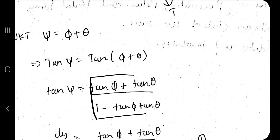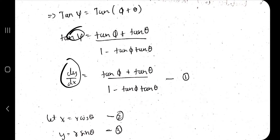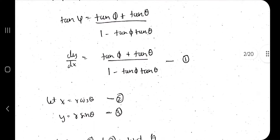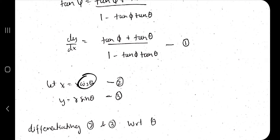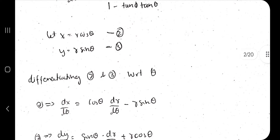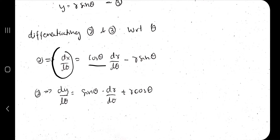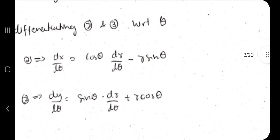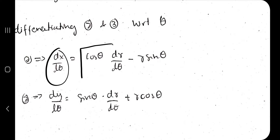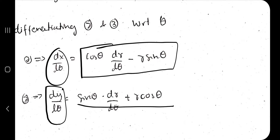Using the tangent addition formula, and writing tan(psi) as dy/dx, we take x = r cos(theta) and y = r sin(theta), then differentiate both with respect to theta. Differentiating gives dx/dθ = cos(θ)·(dr/dθ) − r·sin(θ), and similarly dy/dθ is obtained.